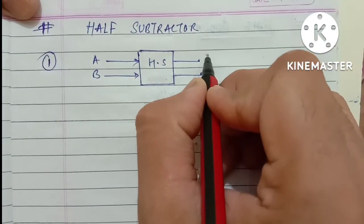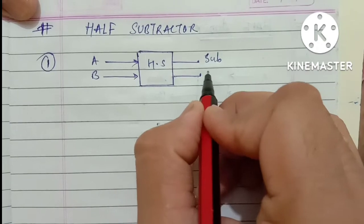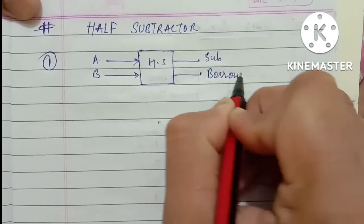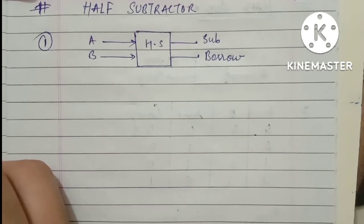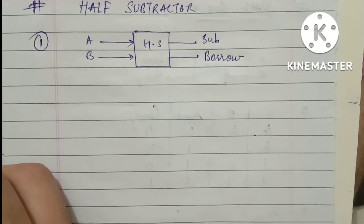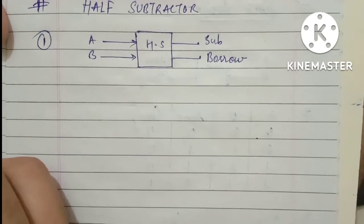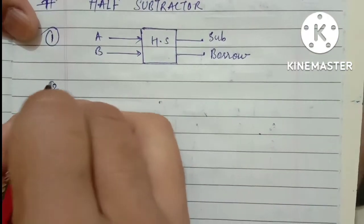One will be basically subtraction and second one will be a borrow. You will take a borrow, right? In subtraction, in addition carry will generate and in subtraction borrow will be taken. We have to borrow from someone.